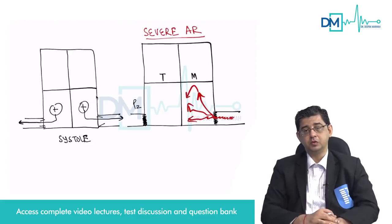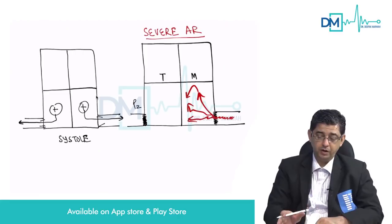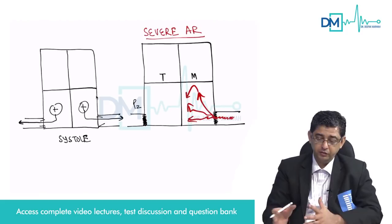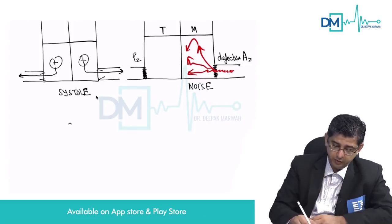The blood races back into the heart with such aggression that it hits the mitral valve leaflets, even though there is no disease of the mitral valve. The mitral valve is getting accidentally involved as the blood racing back creates turbulence — it creates noise — due to defective A2, that is, defective aortic valve closure.